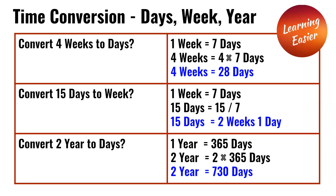Convert 15 days into weeks. One week is equal to seven days. So we do 15 divided by seven. We know seven times two is 14. And 15 minus 14 is one. So 15 days is equal to two weeks and a day.